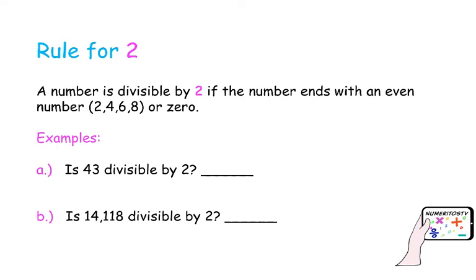Is 43 divisible by 2? If you check the ending of this number, that is a 3. 3 is not an even number, so 43 is not divisible by 2. What about 14,118? Even though we have a big number, we can simply check the ending, which in this case is 8. Because 8 is an even number, this number is divisible by 2. Remember that divisible by 2 means you can divide a number without having a remainder.